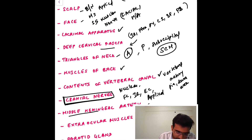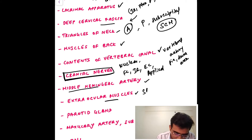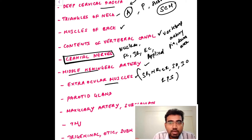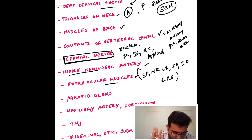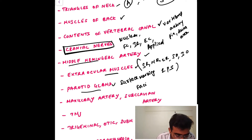The next important topic is the middle meningeal artery and its branches. Then the extraocular muscles — superior rectus, medial rectus, lateral rectus, superior oblique, inferior oblique, and levator palpebrae superioris — and their nerve supply. The parotid gland is one of the most important glands in our field; you need to learn its surface markings, the structures passing through it, the facial nerve, and its applied anatomy.